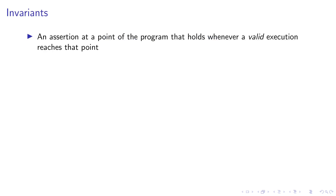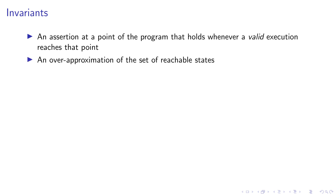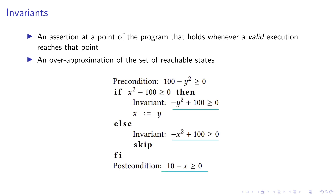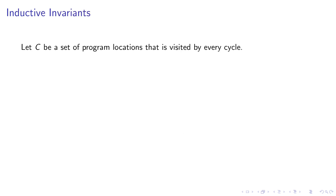Let's start with the very basics. What is an invariant? An invariant is basically an assertion at some point of the program that holds whenever a valid run of the program reaches that point. In other words, an invariant is an over-approximation of the set of reachable states of a program. With this definition, we would consider post conditions to be a special case of invariant.